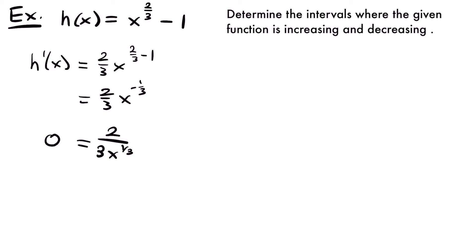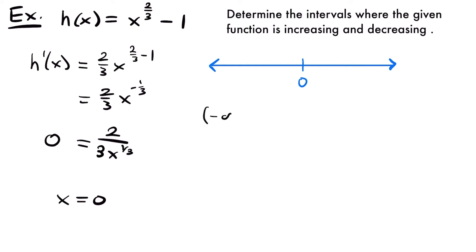Remember, critical points are not only where the slope is 0, but also where the function is not differentiable. Since our derivative is not continuous at x equals 0, our function is not differentiable there, giving us a critical point at x equals 0. Drawing the number line with x equals 0 labeled, we have two intervals: negative infinity to 0, and 0 to positive infinity.